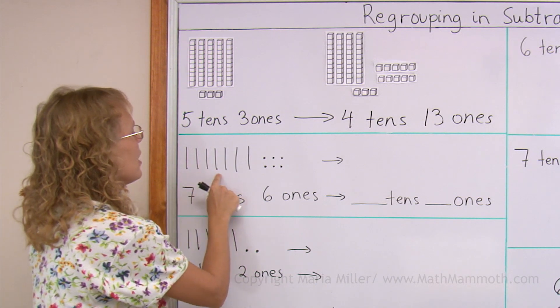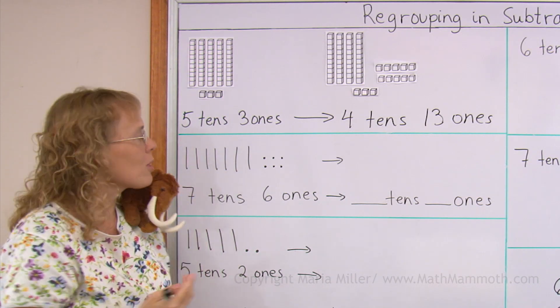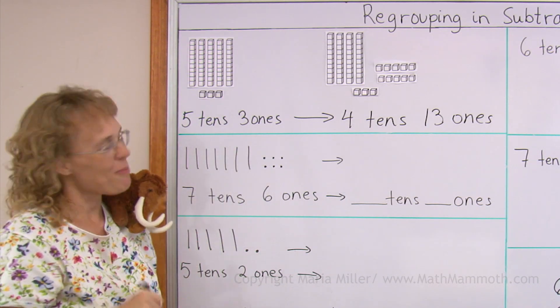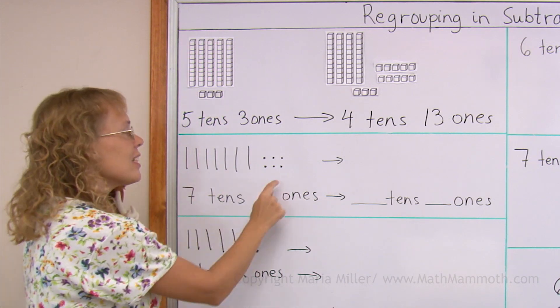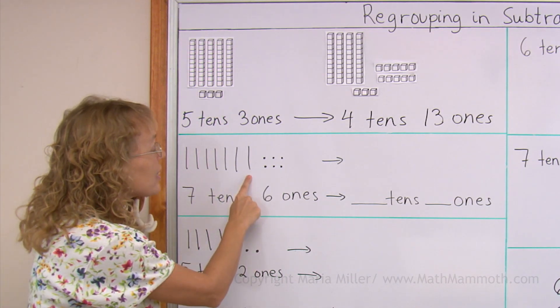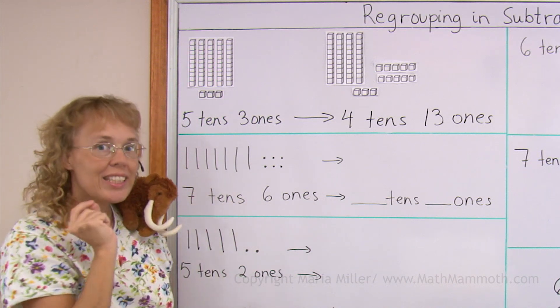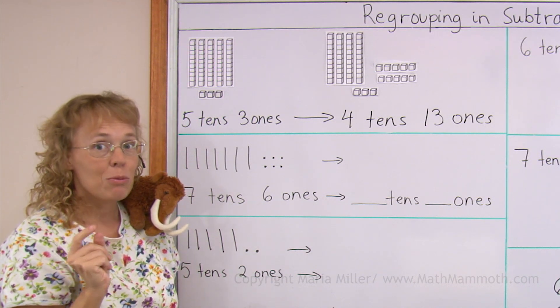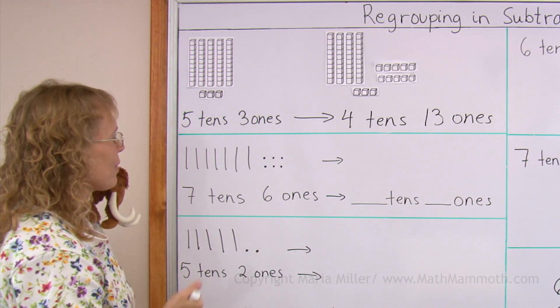This time I'm using these kinds of symbols, this kind of visual model. This one stick is a ten. So I have seven tens and six ones. If I take one of these tens and break it down into ten little ones, then what will we have?